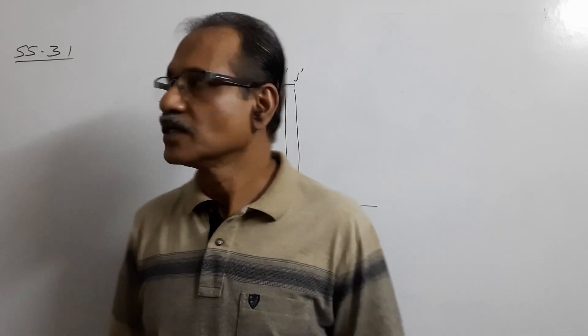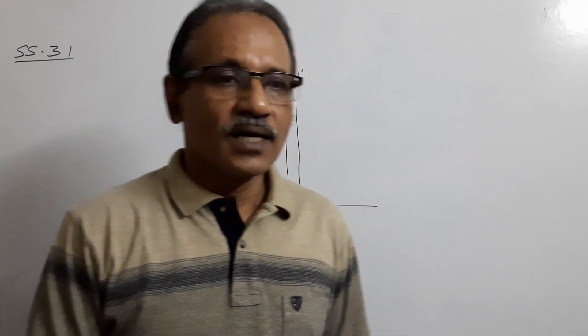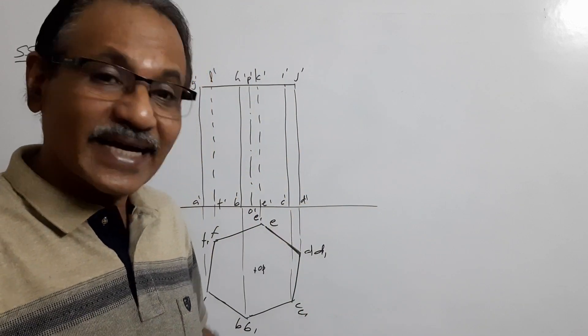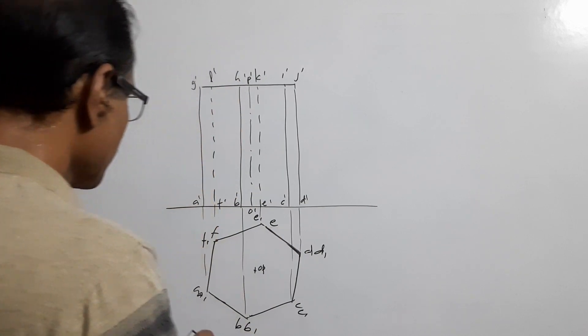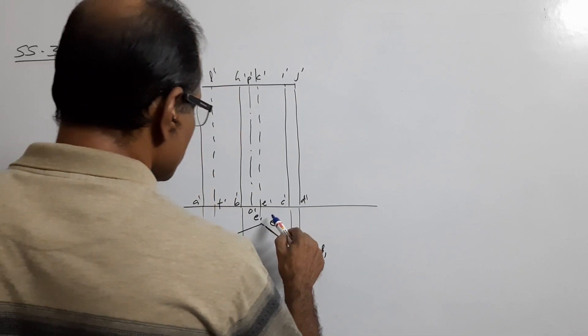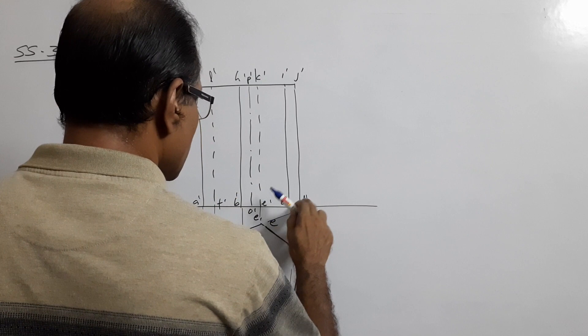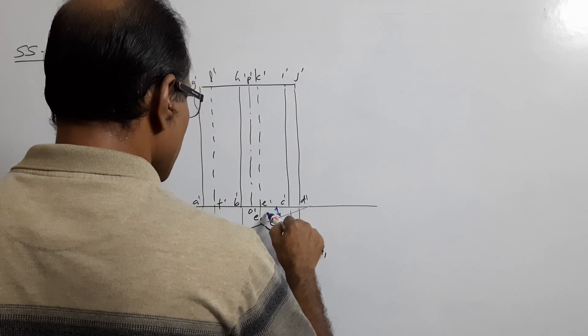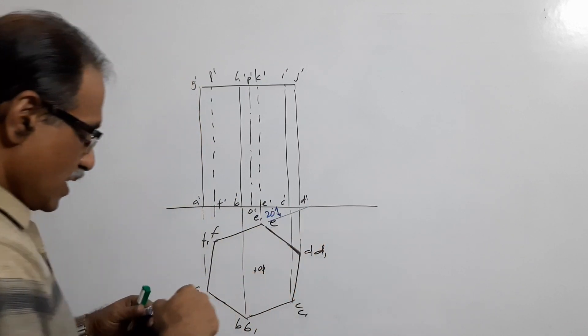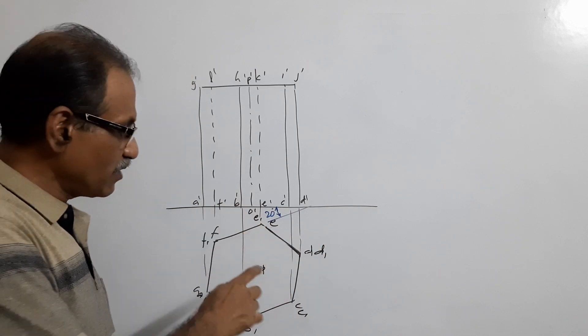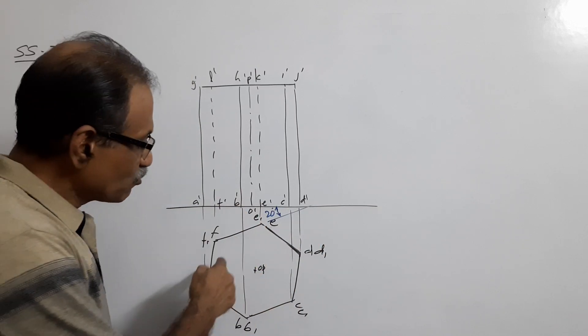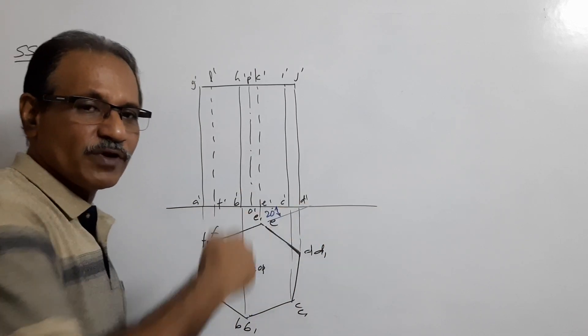Hi students, this is problem number 31 of section of solids. A hexagonal prism rests on HP with one side making 20 degrees to VP.